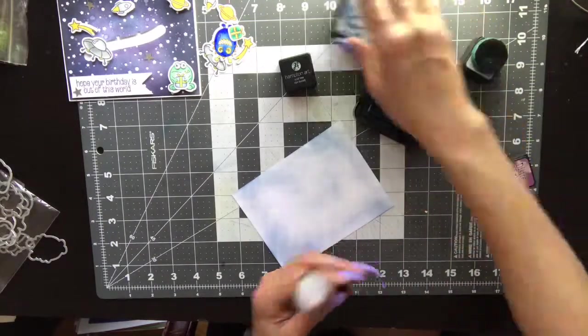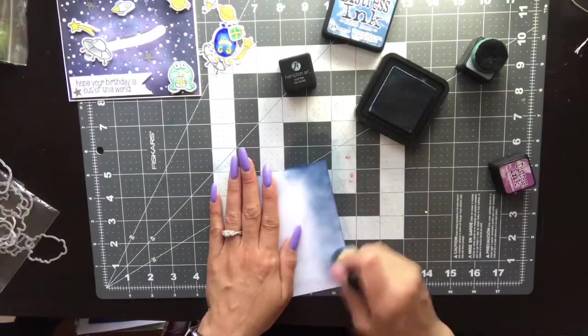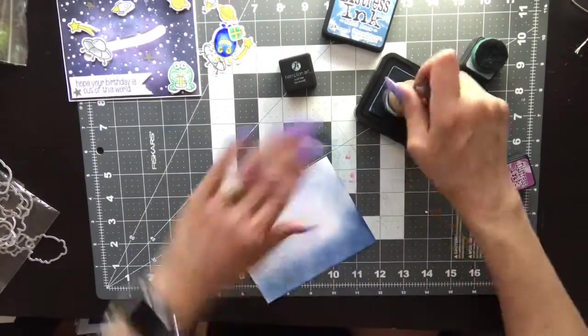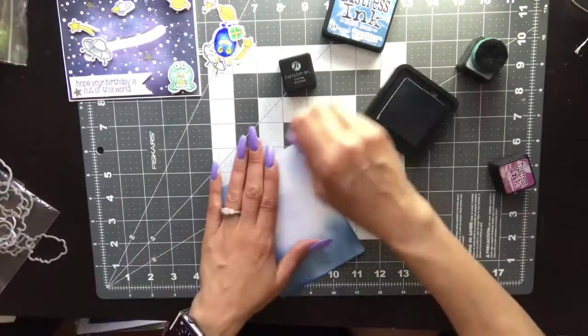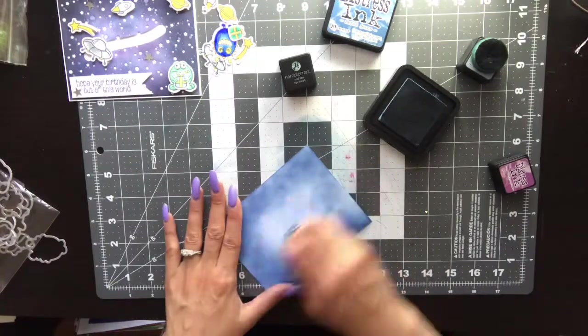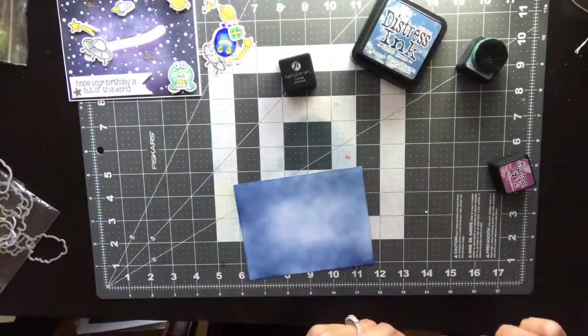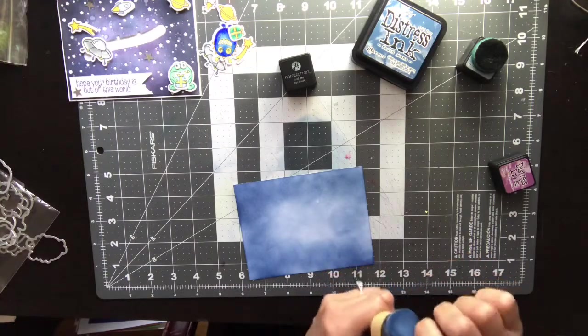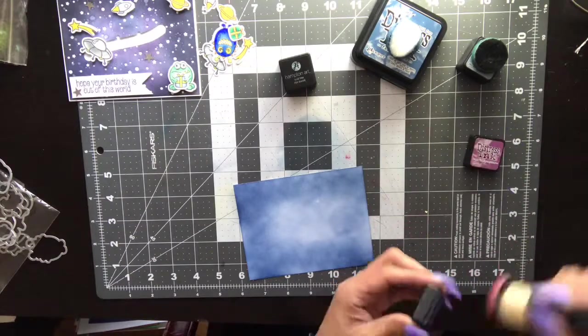The last thing you want to do is have some harsh edges and too much ink. It's better to build up than take away. Next I go with Faded Jeans, which is significantly darker, working all along the edges and then lightly going into the center. I didn't want the center to be too dark, that is where the spaceship is gonna sit and I wanted it to be slightly brighter than the edges.